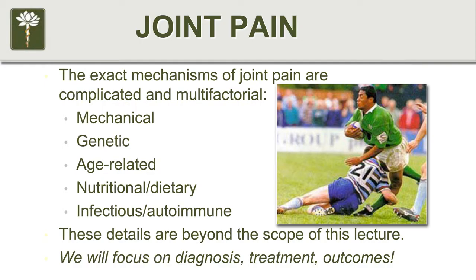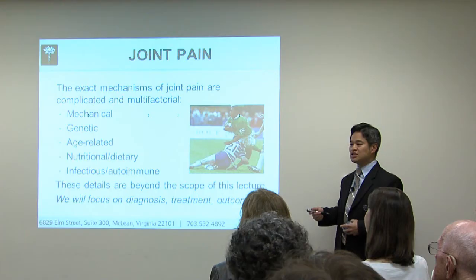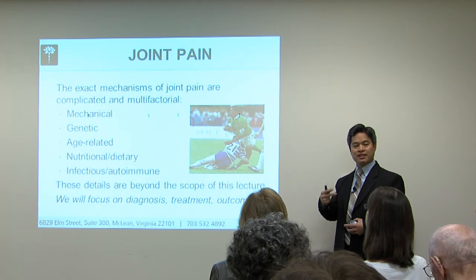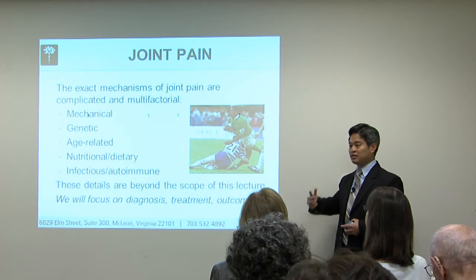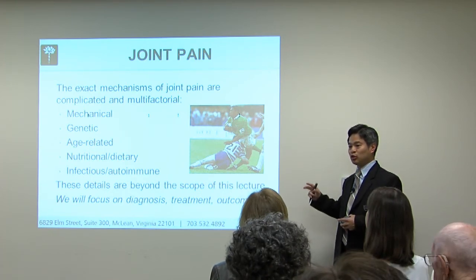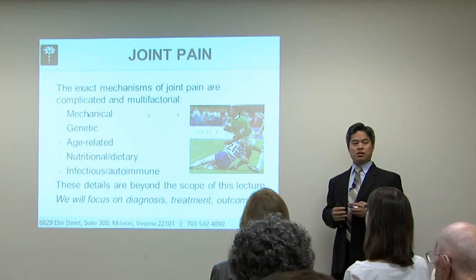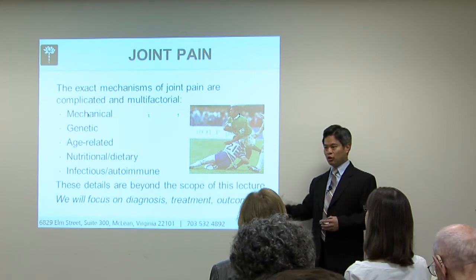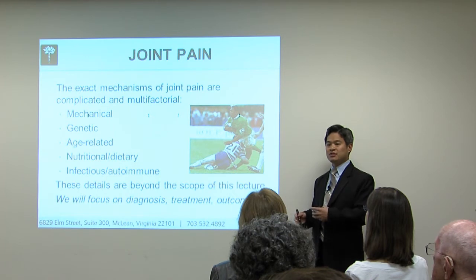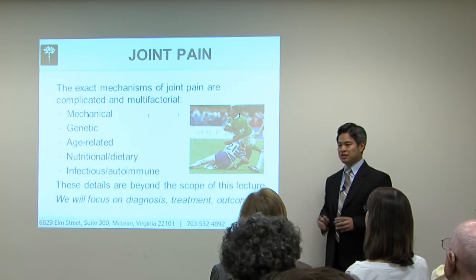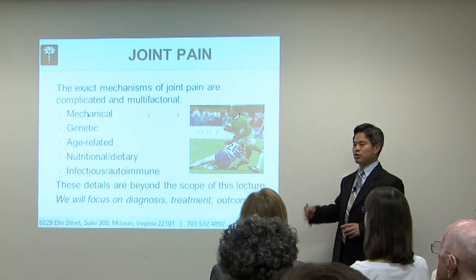Age-related factors are important too — the more senior we become, the more chance there is of degeneration occurring over time. Nutritional and dietary influences also matter, including the issue of inflammation and having a diet that promotes chronic low-level inflammation. A lot of people talk about the Mediterranean diet being low in inflammatory mediators, which can help people who have significant inflammatory arthritic pain.